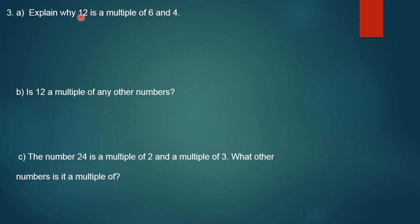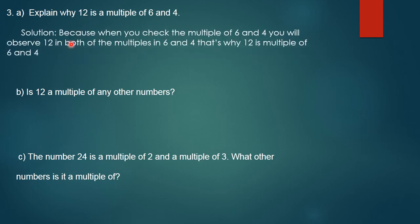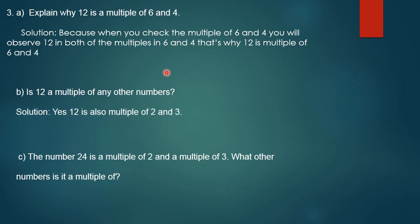Question 3, Option A: explain why 12 is a multiple of 6 and 4. The solution: when you check the multiples of 6, they are 6, 12, 18, 24 — so 12 appears as the second multiple of 6. When you check the multiples of 4: 4, 8, 12 — 12 appears as the third multiple of 4. Because 12 appears in the multiples of both 6 and 4, that's why 12 is a multiple of 6 and 4.